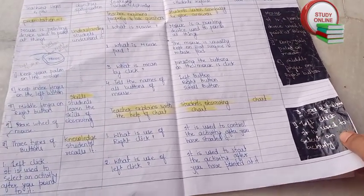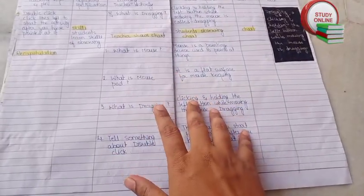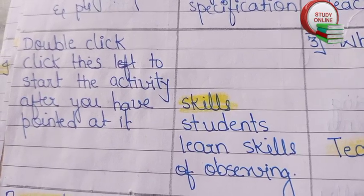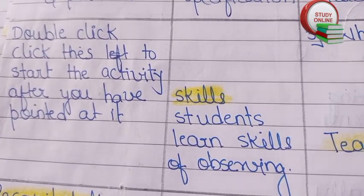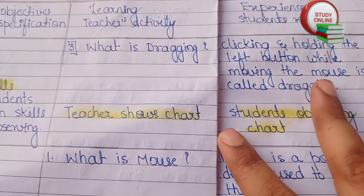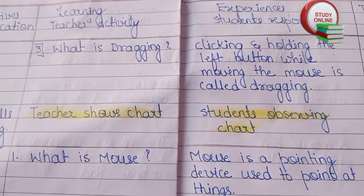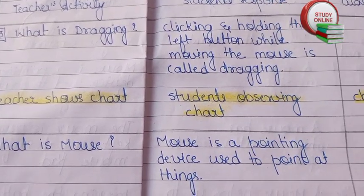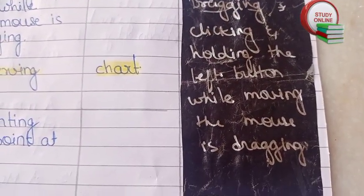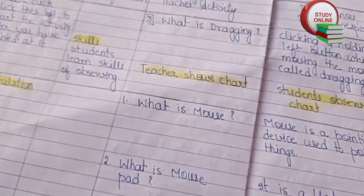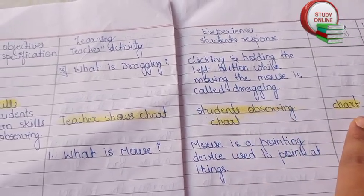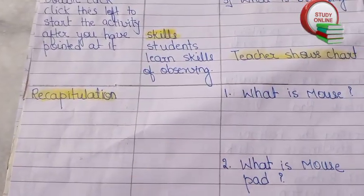Now for the rest of Presentation Two: what is double click — we explain that properly. We also cover what is dragging, ask a question related to it, and here is the expected answer. For the blackboard work we explain dragging, and the teacher shows charts while students observe the chart.